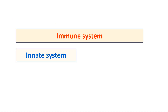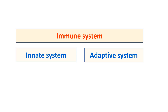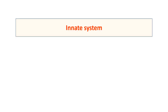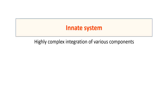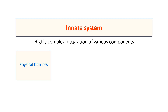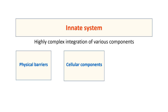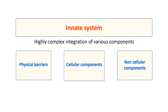Now let's focus on the innate immune system. The innate immune system is a highly complex integration of various components. It has three major components: the physical barriers, the cellular components, and the non-cellular components.